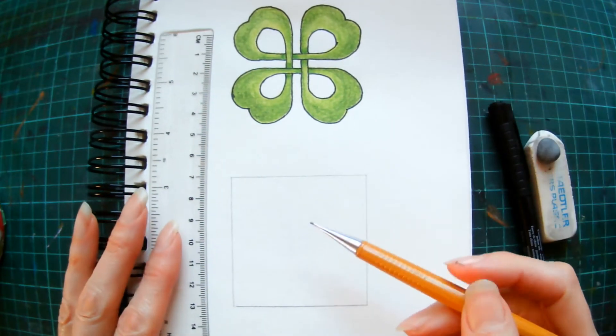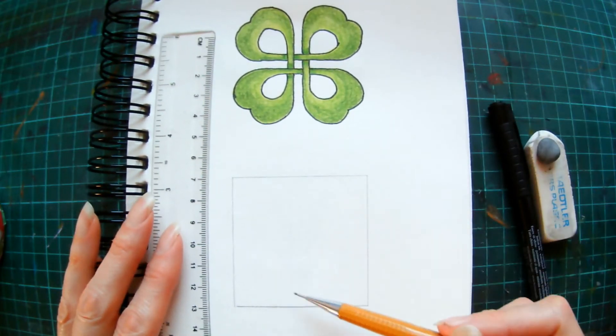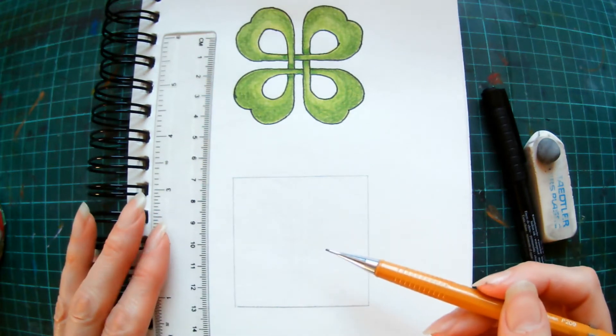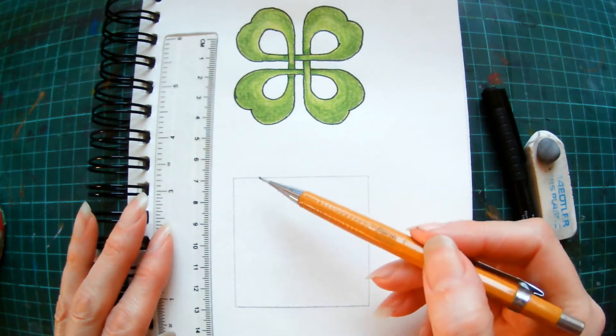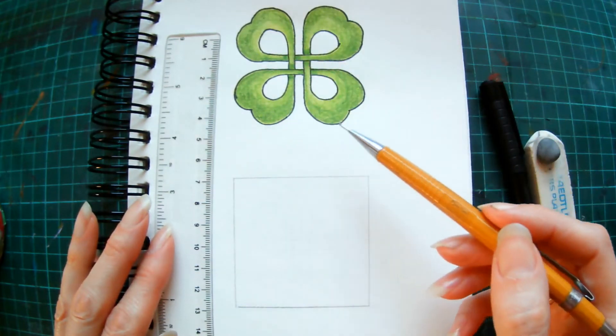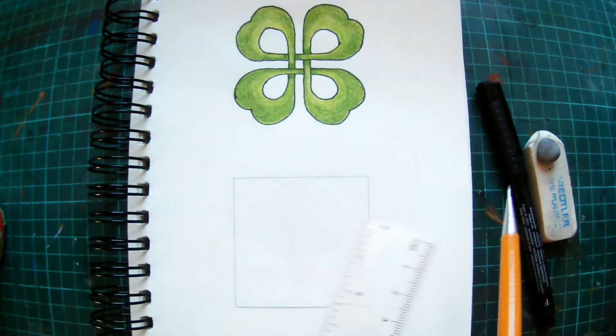So we're going to draw our guidelines first, and you want to draw your guidelines quite faint. I'm going to draw mine a little bit darker so that you can make sure that you see them. So draw out a square as big as you want the outer edges of your four-leaf clover to be. Mine's six centimeters.